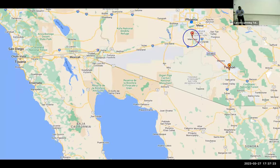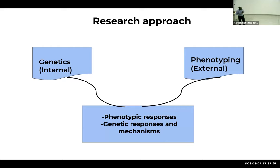I use different approaches in my research: genetics — think of it as the internal one — and then phenotyping, which looks at the external part. Combining these two different approaches, I'm able to tell what is the phenotypic response of the different accessions of sorghum that I study. And beyond that, what is the genetic makeup, the mechanism that controls the phenotypic responses that we're seeing.